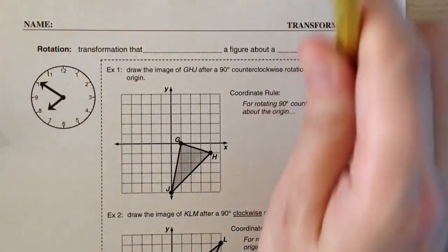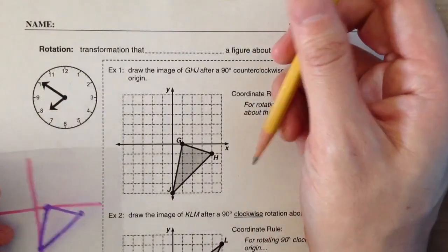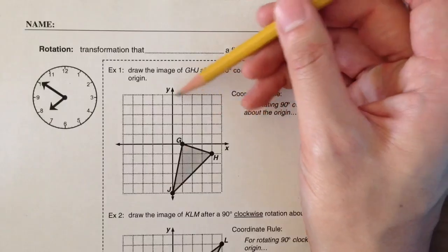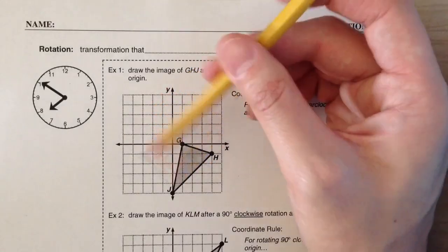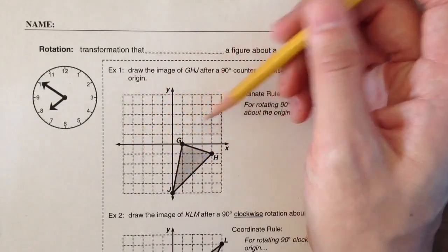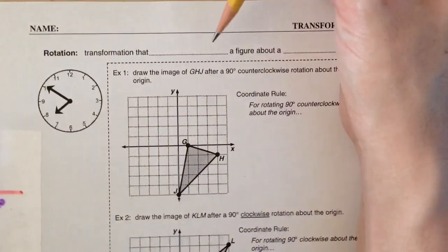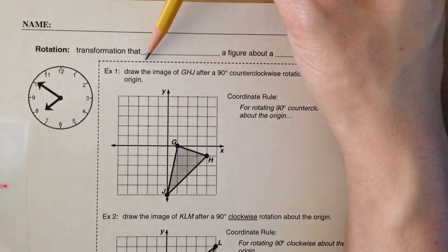So we learned how to do rotations today and we're using tracing paper. If we have a coordinate grid with our shape here, and we want to rotate it 90 degrees counterclockwise about the origin.